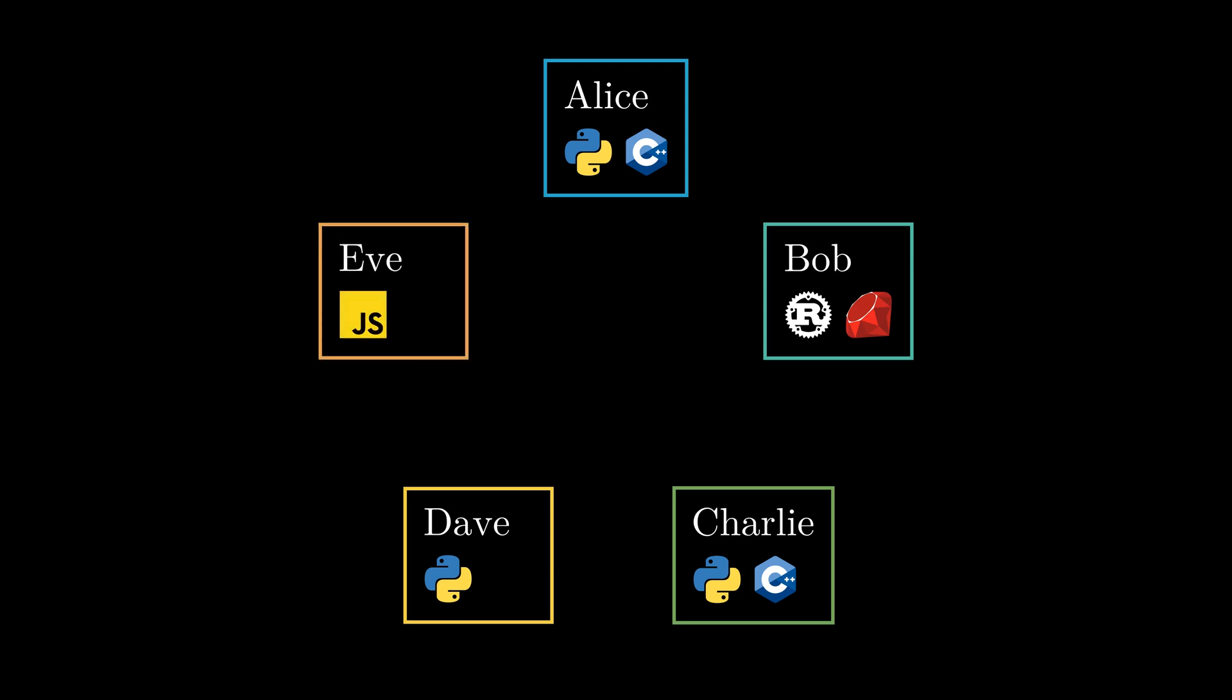Let's start with a simple example to motivate our algorithm. There are five candidates for a programming job with the programming language Python. Alice has experience in Python and C++. Bob has experience in other languages. Charlie has the same qualifications as Alice. Dave knows Python. And Eve knows JavaScript. A biased model has suggested to consider Charlie and Dave, but to exclude Alice.